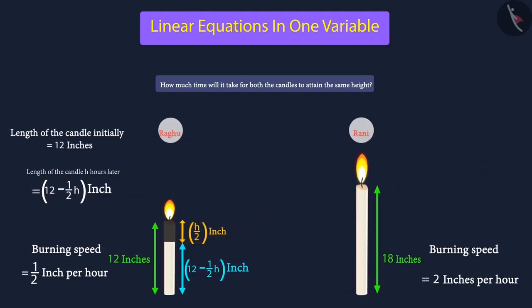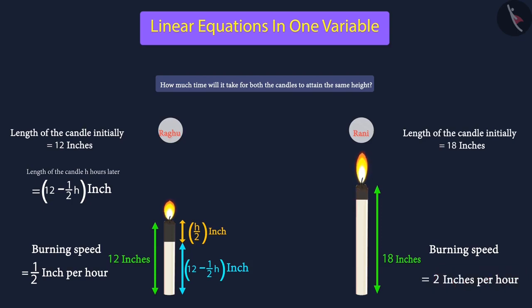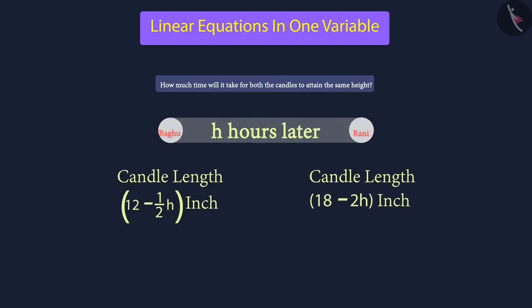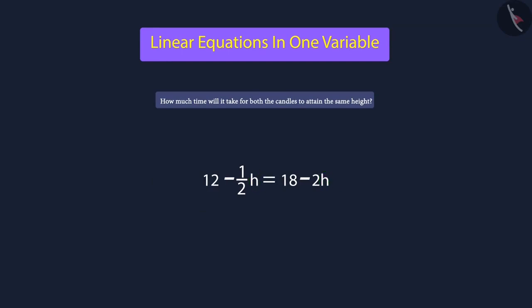The same method will also apply to Rani's candle. Rani's candle was 18 inches in length, burning at a speed of 2 inches per hour. So, in H hours, Rani's candle will burn 2H inches. Therefore, the length of Rani's candle after H hours will be 18 minus 2H inches. Now, we have expressions for the length of both candles after H hours. We must find the value of H for which both candles will have the same length. This gives us our linear equation in H — but again, there are variables on both sides.